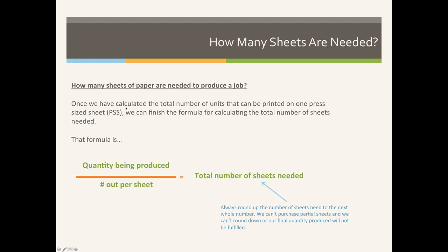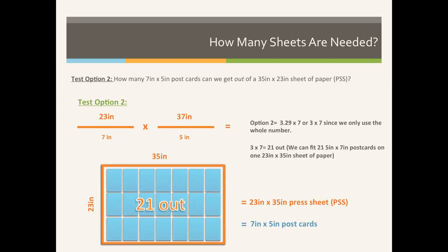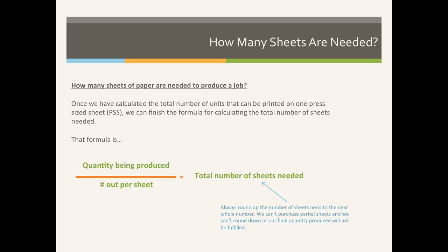Once we've calculated the number out required for our job, we can use that value to calculate the total number of sheets needed. Again, this should be review, but the formula for calculating the number of sheets needed is the quantity that you're trying to produce — in our case we're producing postcards — divided by the number out per sheet, which we calculated to be 21.